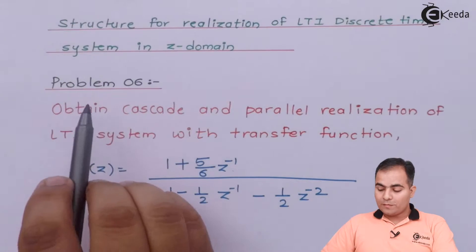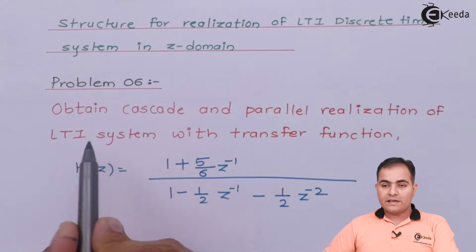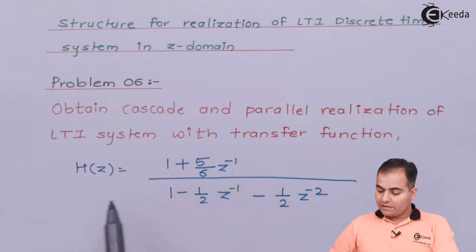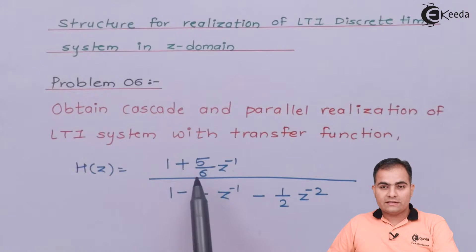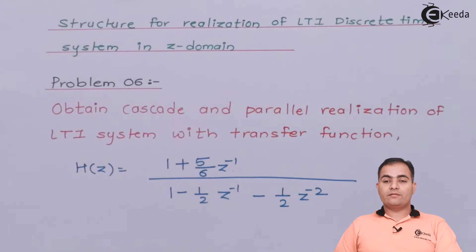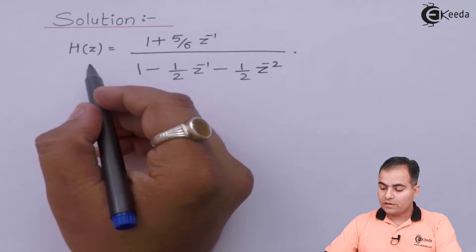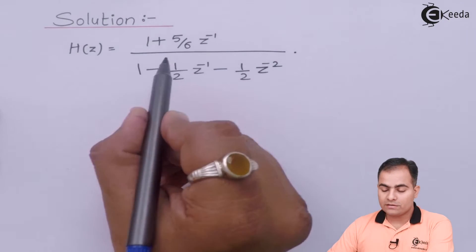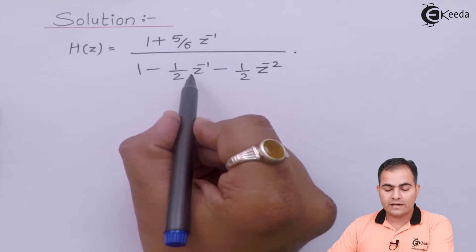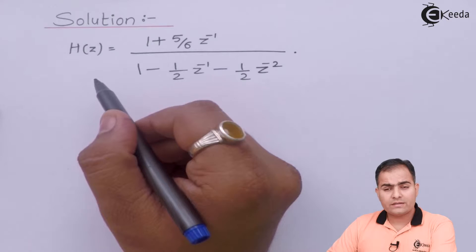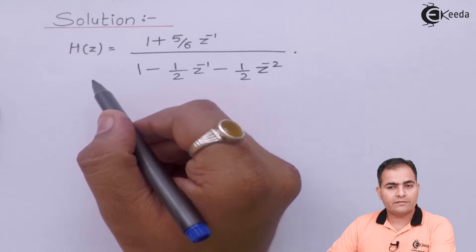Problem number 6: Obtain the cascade and parallel realization of an LTI system with transfer function H(Z) = (1 + 5/6 Z⁻¹) / (1 - (1/2)Z⁻¹ - (1/2)Z⁻²). Now we will go for the solution. H(Z) is given and first of all we will calculate the cascade form.